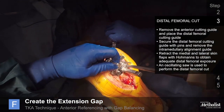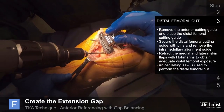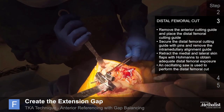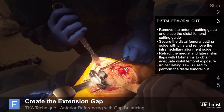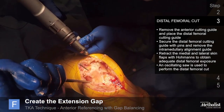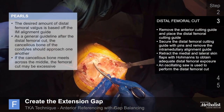Remove the anterior cutting guide and place the distal femoral cutting guide. Secure it with pins and remove the intramedullary alignment guide. Retract medial and lateral skin flaps with retractors to obtain adequate distal femoral exposure, then use an oscillating saw to perform the distal femoral cut, ensuring it is complete all the way to the posterior femur. The desired amount of distal femoral valgus alignment is based off the intramedullary alignment guide. As a general guideline, after the distal femoral cut the remaining cancellous bone bed of the condyles should approach one another centrally; if the cancellous bone meets across the middle, the femoral cut may be excessive.